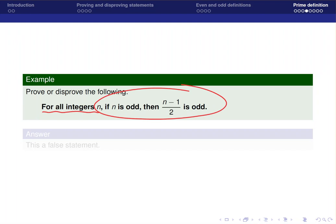So to prove it, I would have to find integers that are odd, and I would have to show that the fraction n minus 1 divided by 2 is going to be odd when those integers are plugged in. And I have to do this for every possible integer out there.